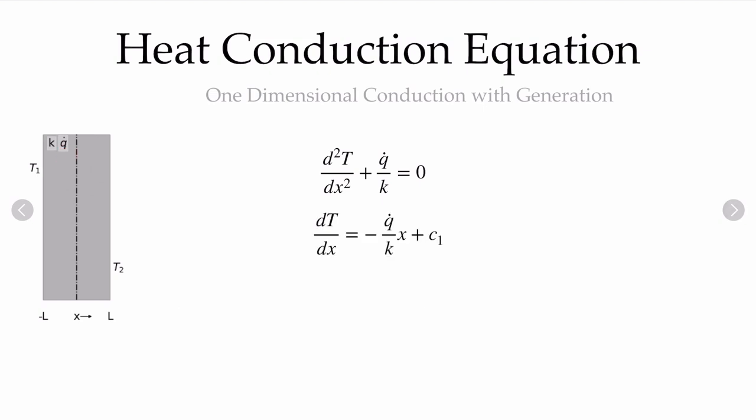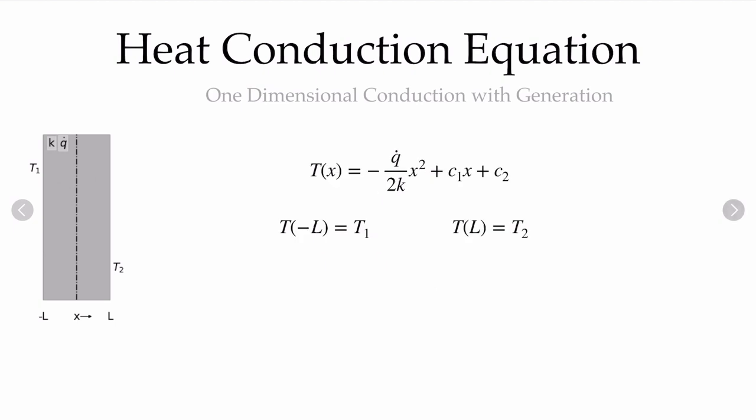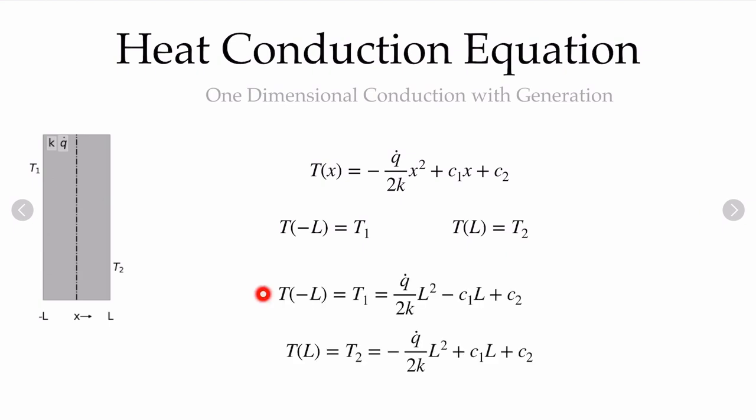With our boundary conditions, we can integrate our ordinary differential equation. Integrating once, we get minus q-dot over k times x plus C1. Integrating again, we get a quadratic in x for the temperature distribution with two unknown constants. We write the two boundary conditions: at the minus L surface the temperature equals T1, and at the positive L surface the temperature equals T2. Evaluating the temperature at both locations gives us two equations to solve for the two unknown constants.